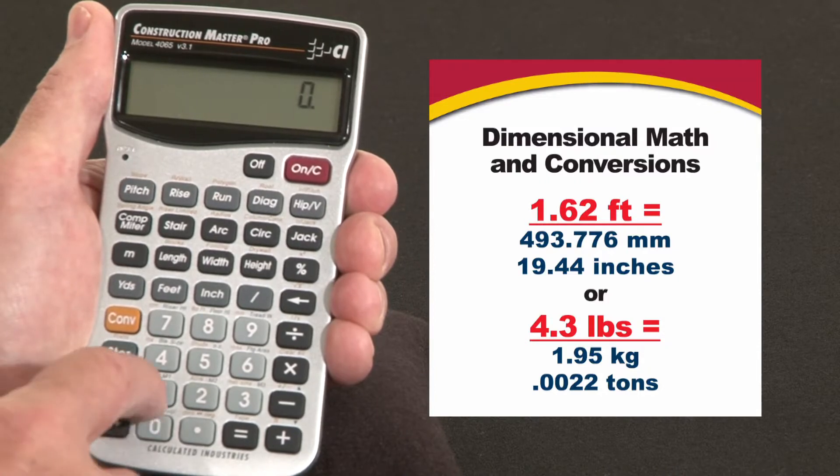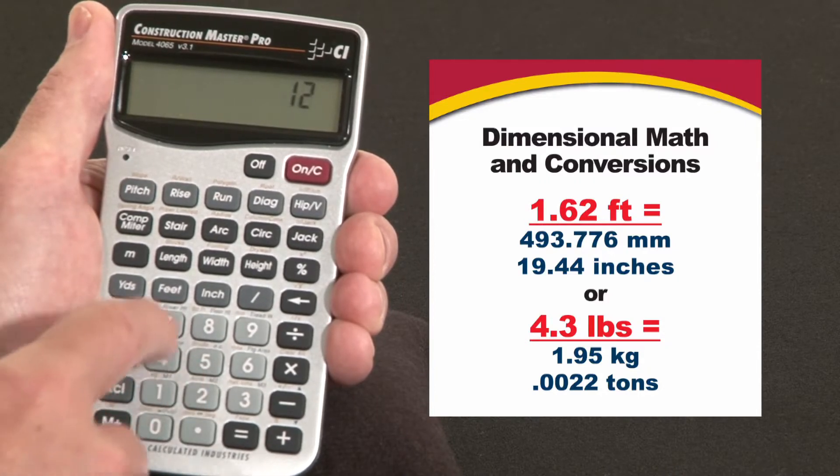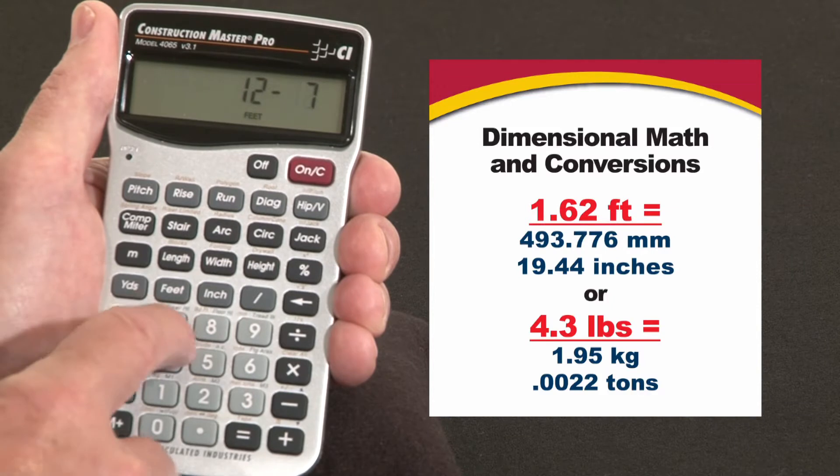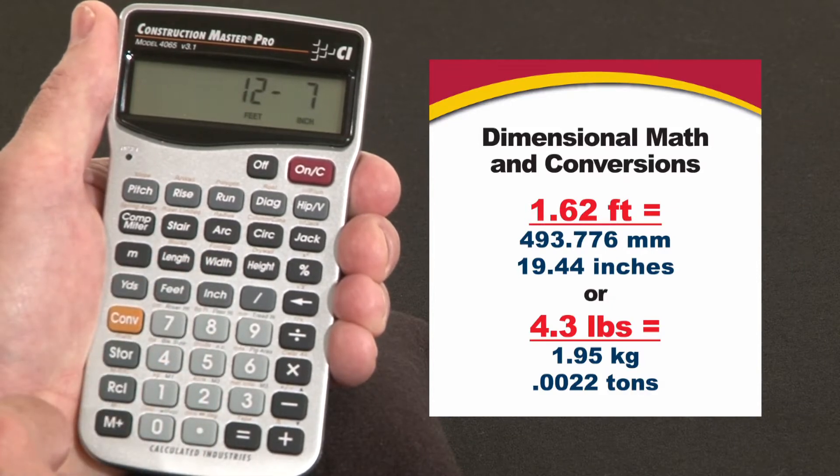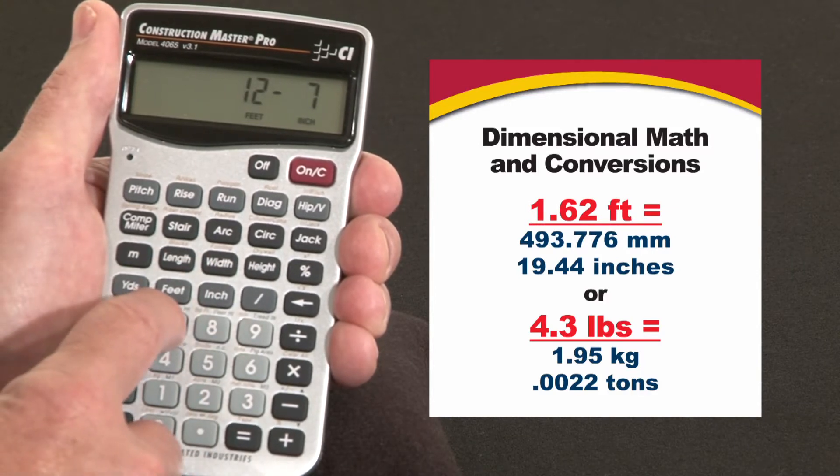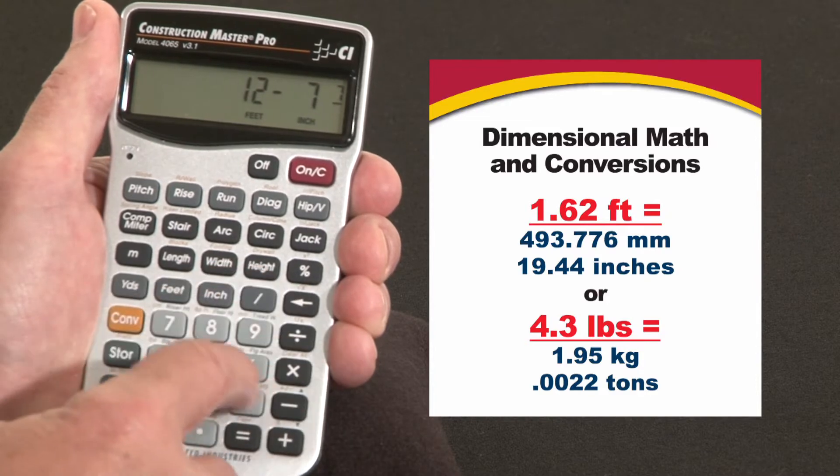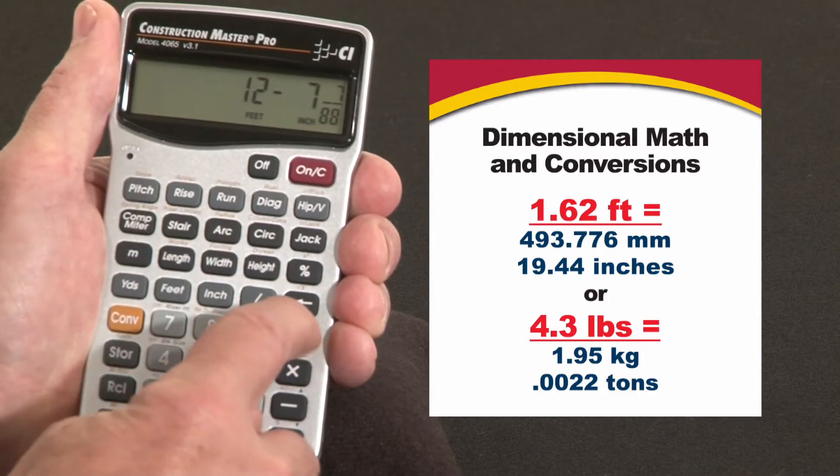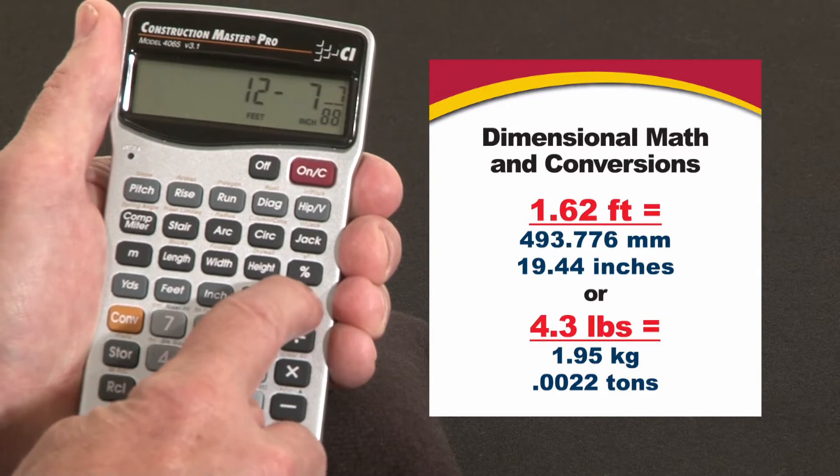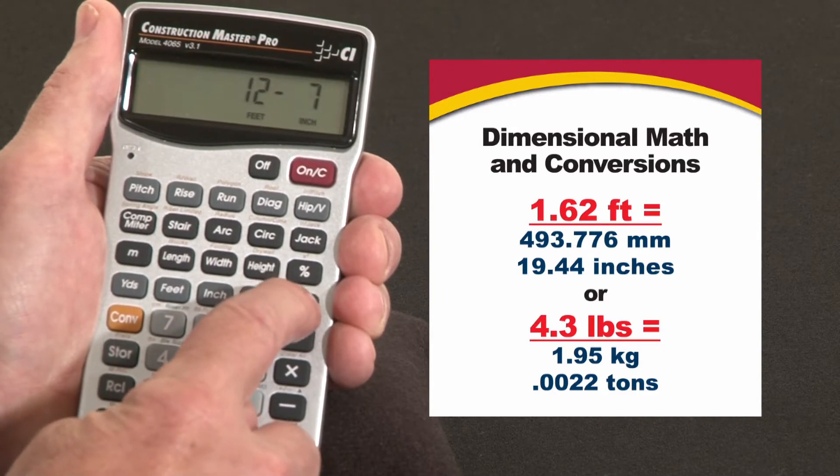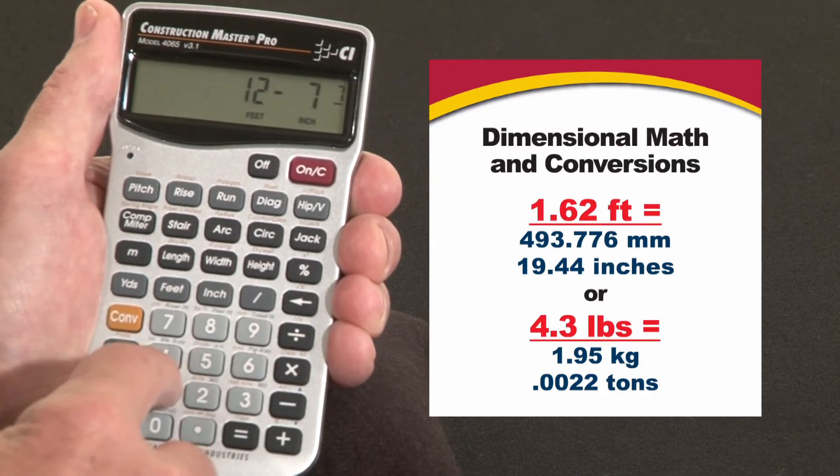Pretty much you put in dimensions the way you say them. Put in fractions down to sixty-fourths of an inch. Just the way you write it, seven slash eights. Now see there I've hit an extra eight. With this little backspace back arrow key you can back digits out one at a time. So let's go back in and say seven sixteenths just for fun.